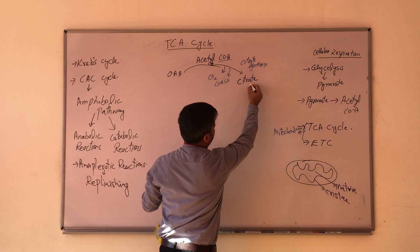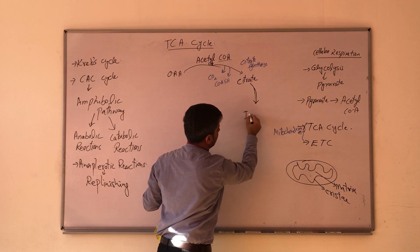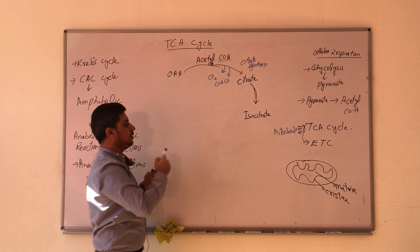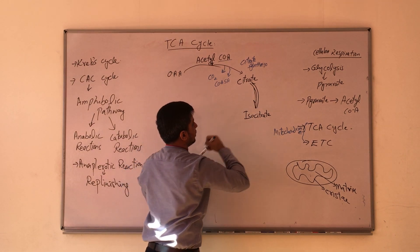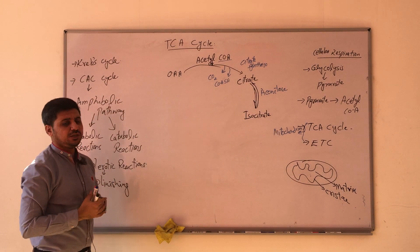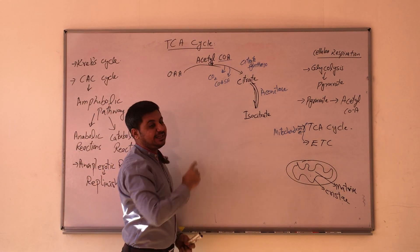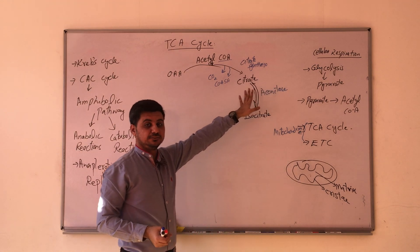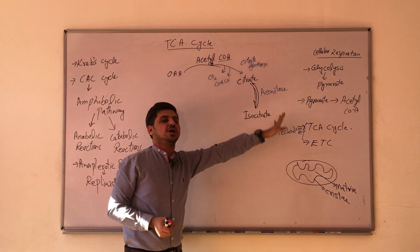From citrate, through two reactions, it will be converted into isocitrate. This is a reversible reaction and the enzyme involved is aconitase. This reaction is very significant and clinically very important — I will explain all the clinical significance at the end of this pathway for each reaction.